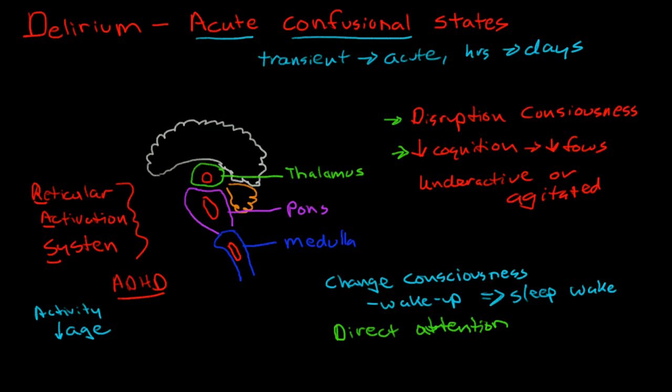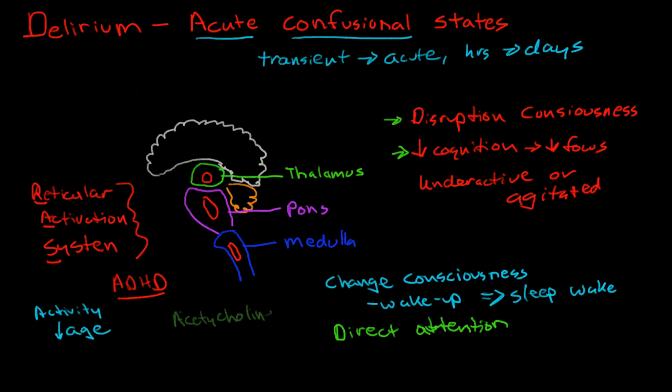However, again, this is an acute condition, so elderly people may be prone to it, but they need another precipitating event. So what happens? The reticular activating system is dependent on acetylcholine. Actually, there's two sets of neurotransmitters that are very active in the reticular activating system. One is acetylcholine and the other is norepinephrine.